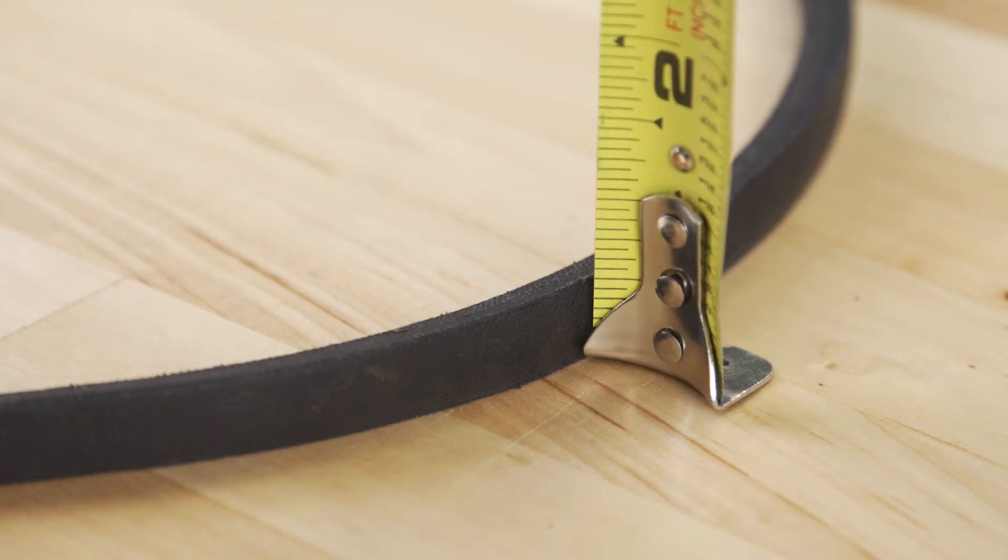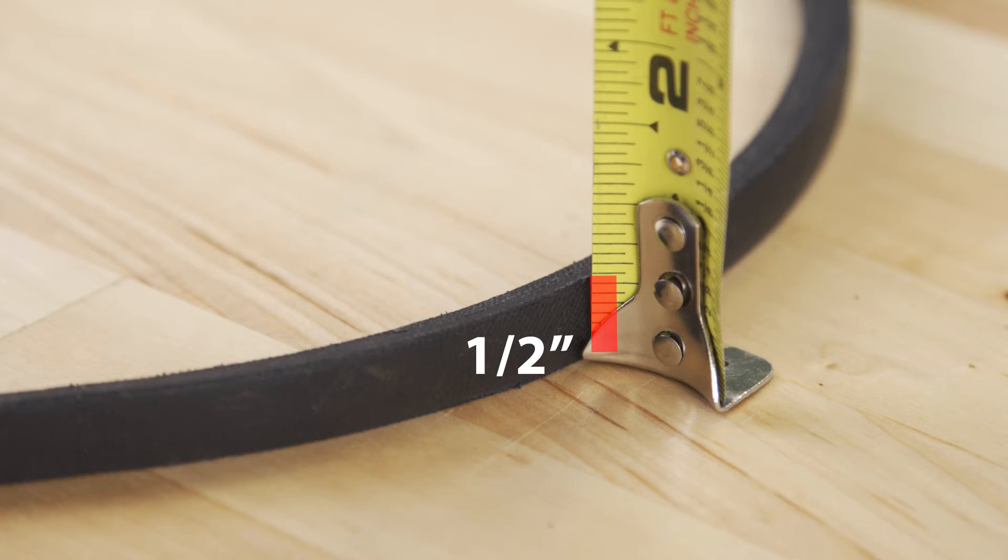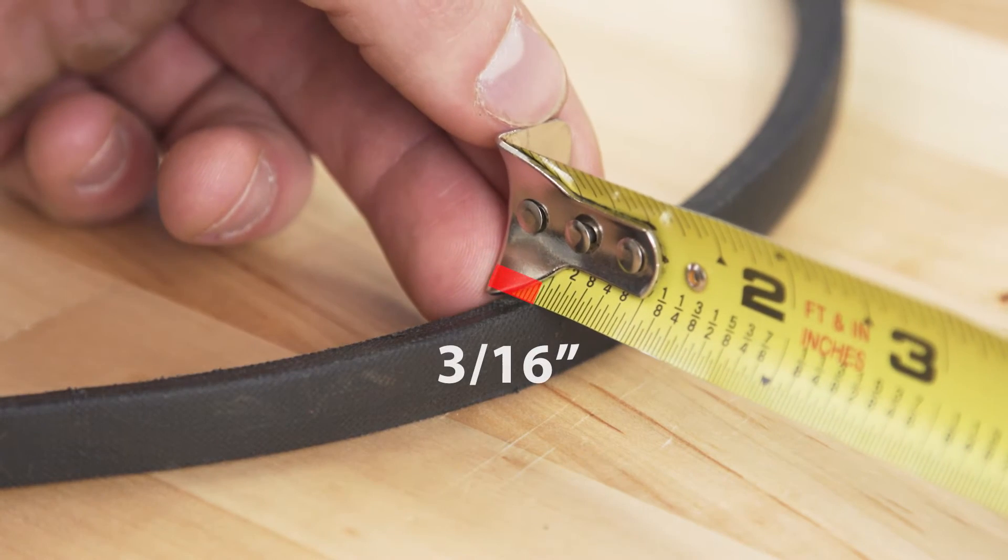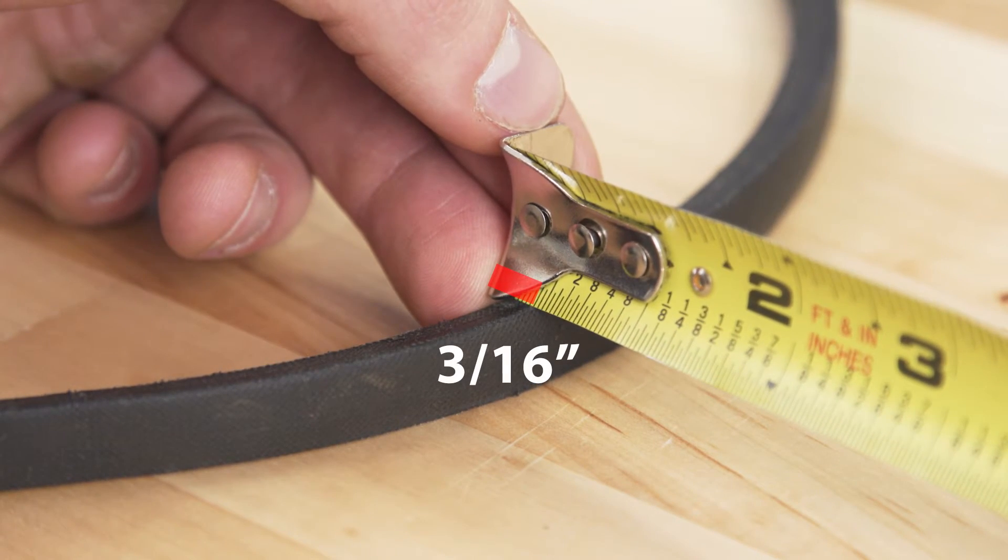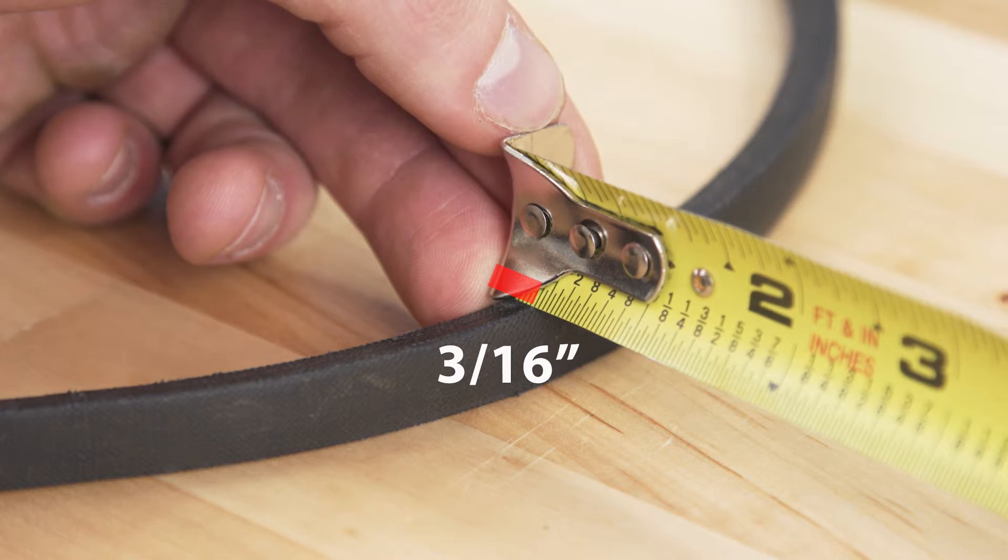To find a match, first measure the top width. Next, measure the depth. These two measurements can be used to match the belt type and size.